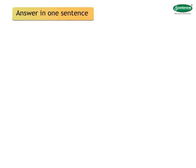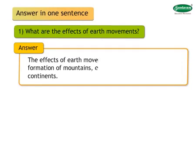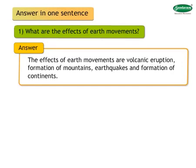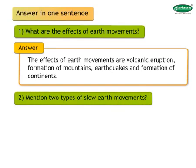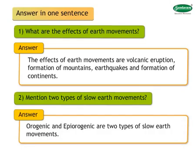What are the effects of earth movements? The effects include volcanic eruption, formation of mountains, earthquakes, and formation of continents. Mention two types of slow earth movements: orogenic and epi orogenic are the two types of slow earth movements.